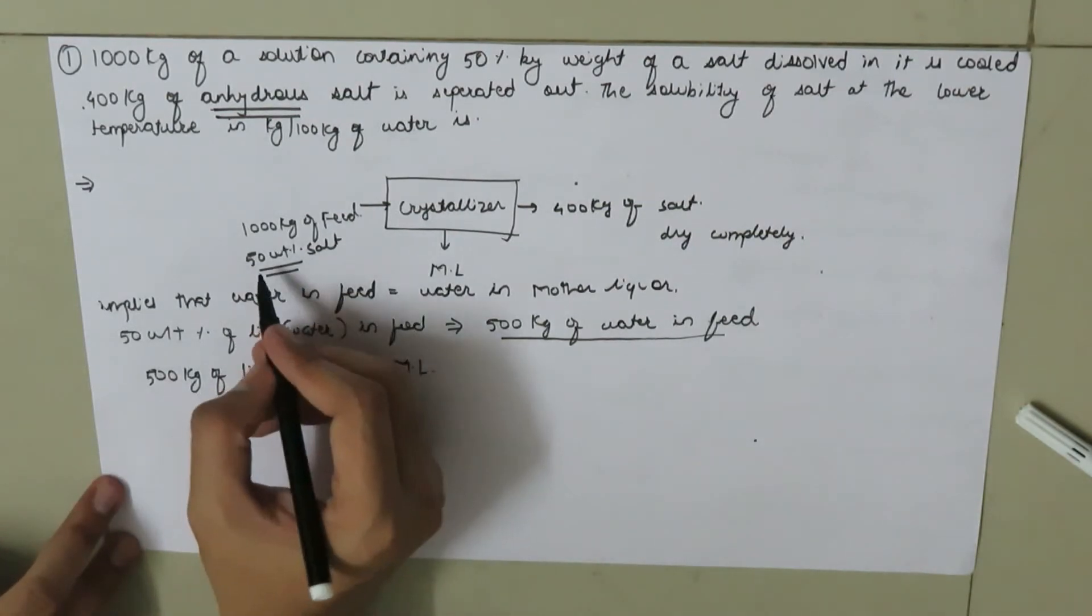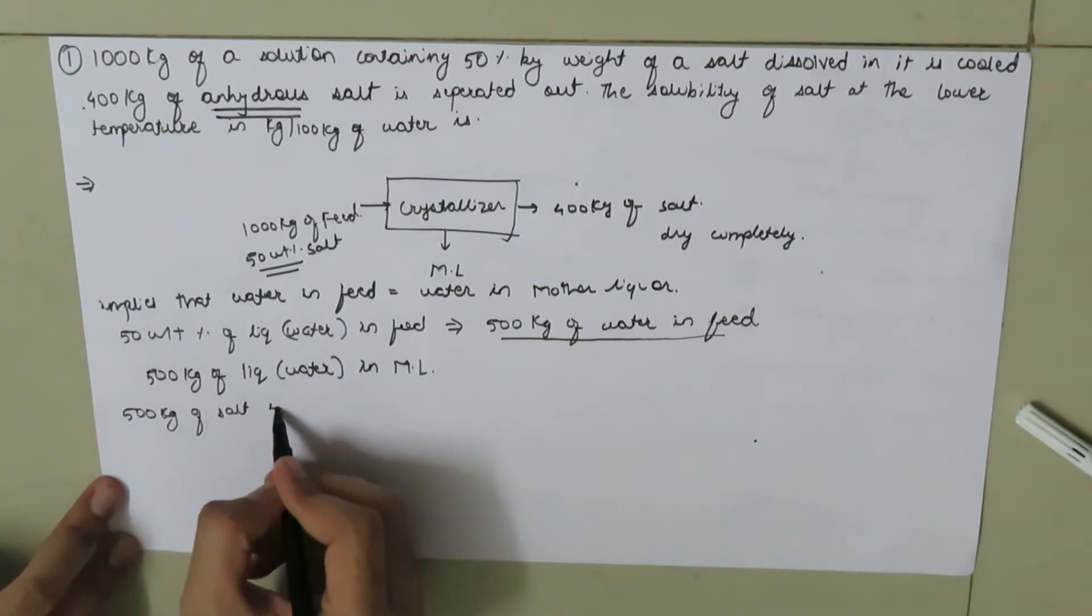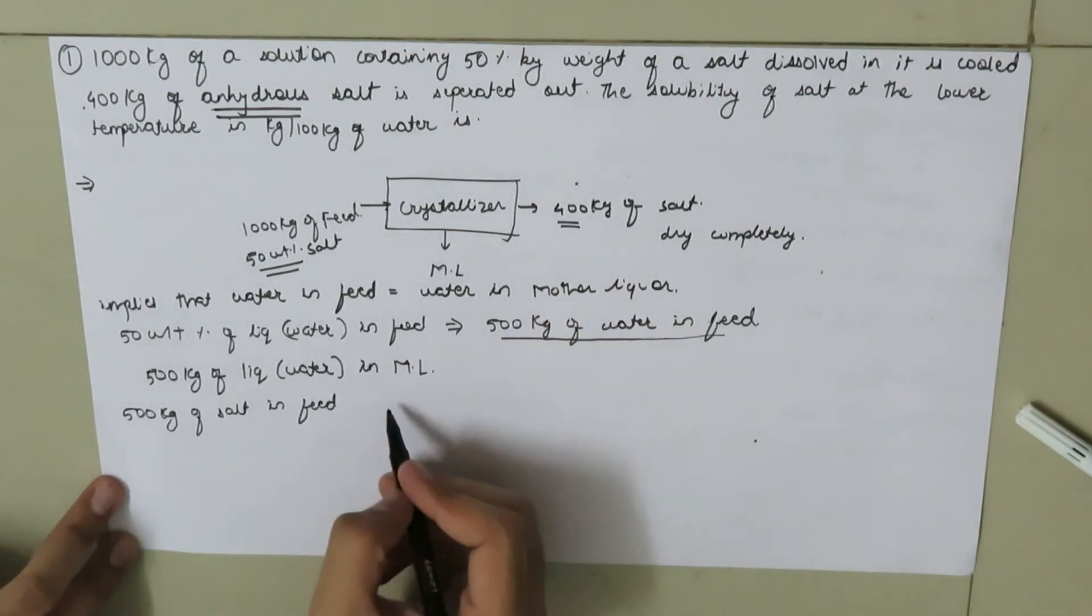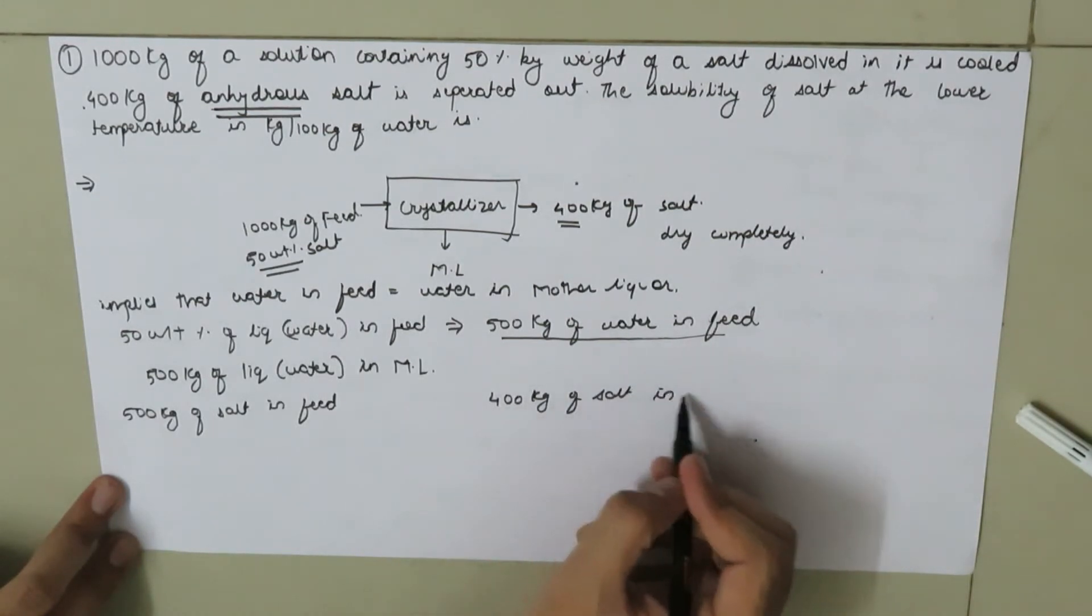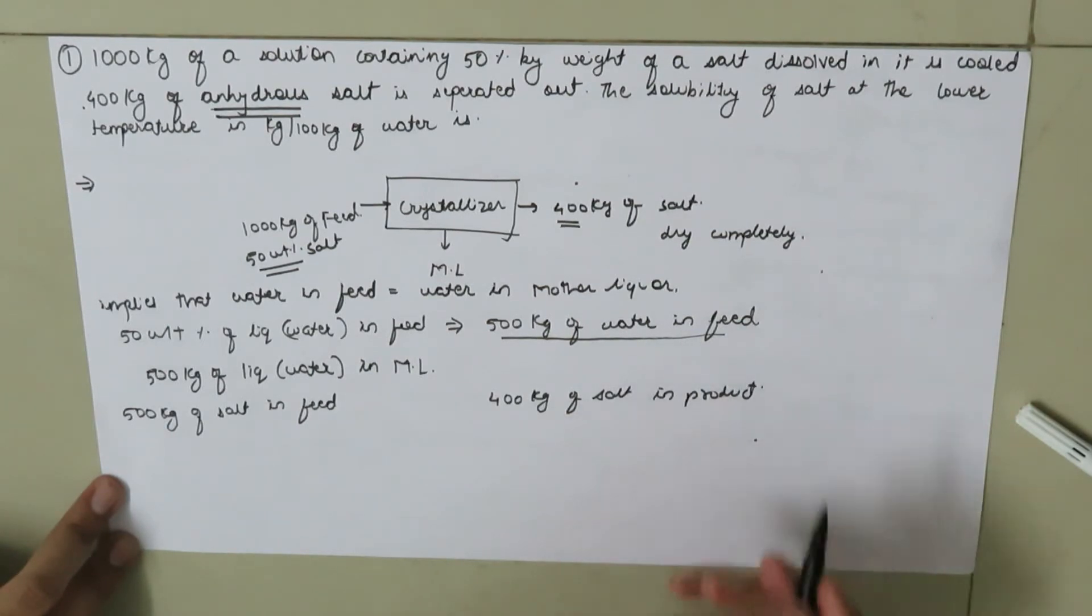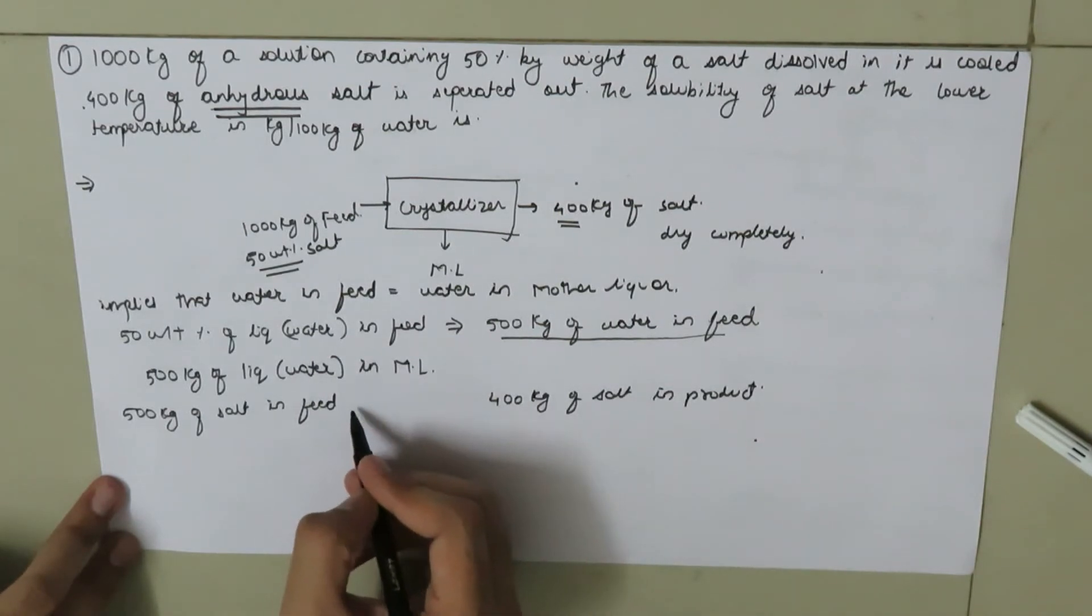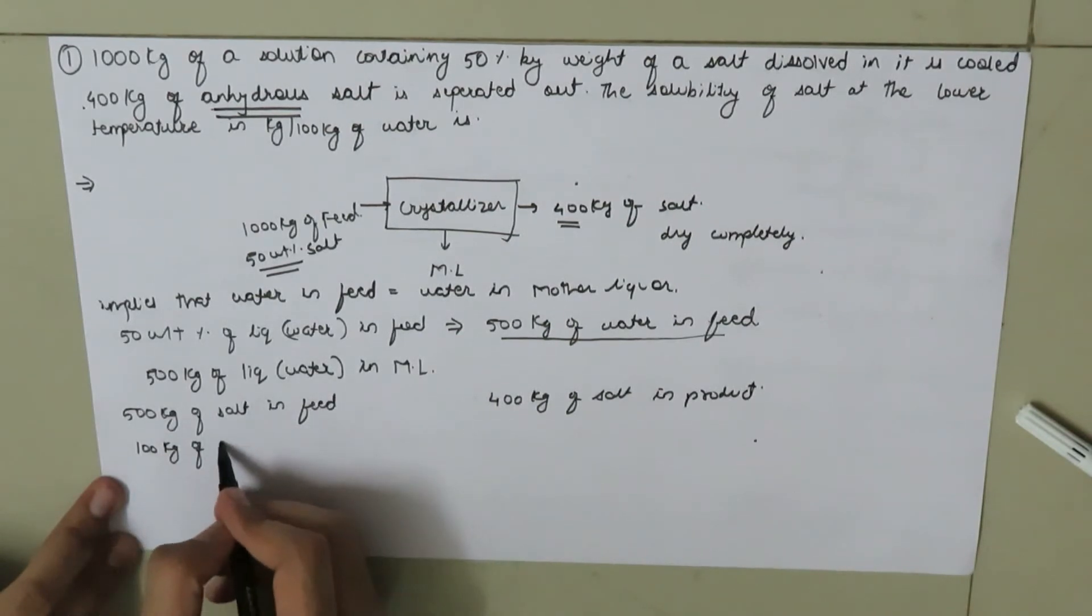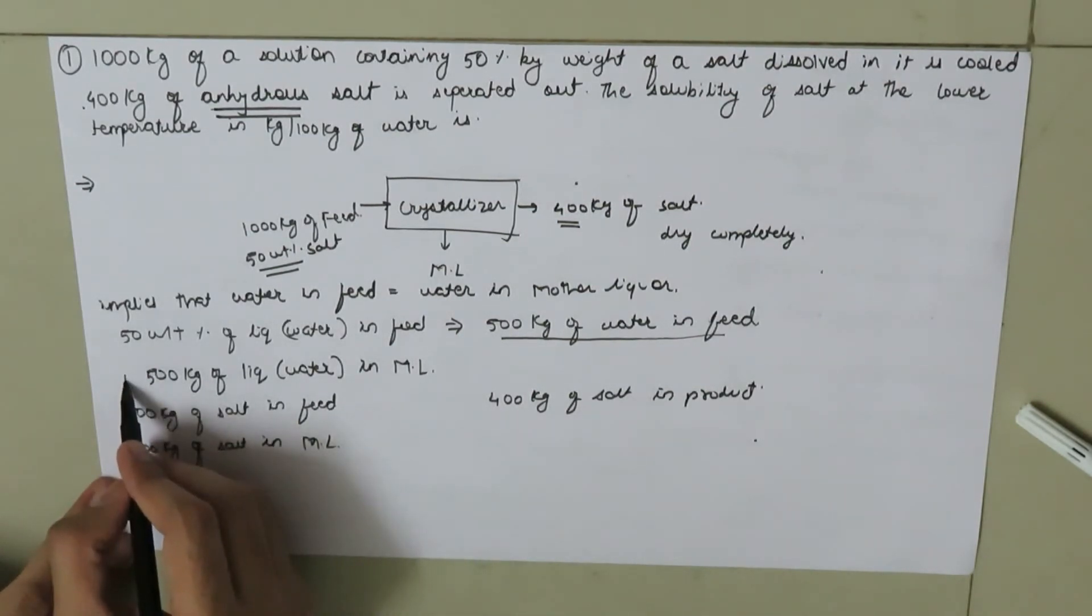If you do the salt balance, here we have 500 kg of salt in feed, and in the product we have 400 kg of salt. So by doing the material balance for the salt, we have 100 kg of salt in mother liquor.